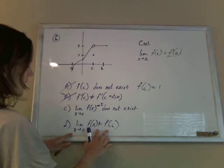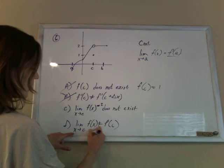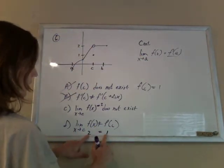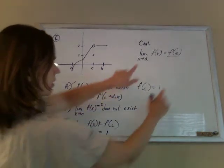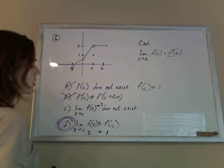But here is the idea. The limit, we said the limit as x goes to c was 2, but the value here was 1. And since the limit doesn't equal the value of the function, that's why this thing is not continuous.